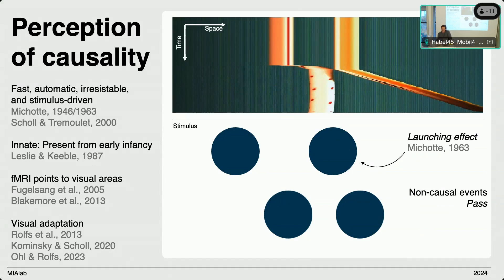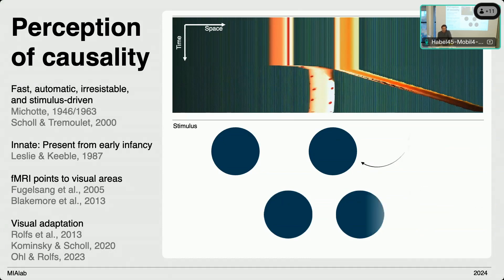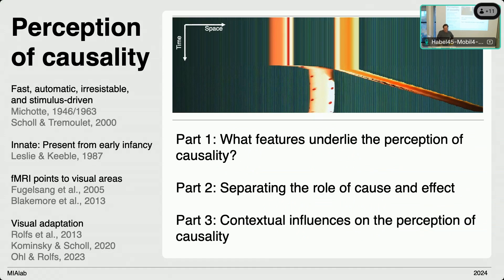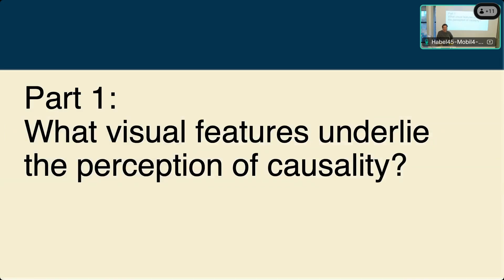In the rest of this presentation, I'll make heavy use of adaptation protocols. We use this old technique in a new setting to look at what features of the space-time plot underlie the perception of causality. Then we try to separate the role of cause and effect, and in the third part we look at contextual influences on the perception of causality.